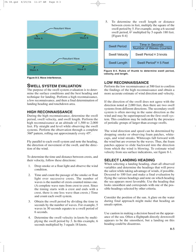Perform the low reconnaissance at 500 feet to confirm the findings of the high reconnaissance and obtain a more accurate estimate of wind direction and velocity. If the direction of the swell does not agree with the direction noted at 2,000 feet, then there are two swell systems from different directions. The secondary swell system is often moving in the same direction as the wind and may be superimposed on the first swell system, indicated by periodic groups of larger than average swells. Wind direction and speed can be determined by dropping smoke or observing foam patches, whitecaps, and wind streaks. Whitecaps fall forward with the wind but are overrun by the waves, so foam patches appear to slide backward into the direction from which the wind is blowing.